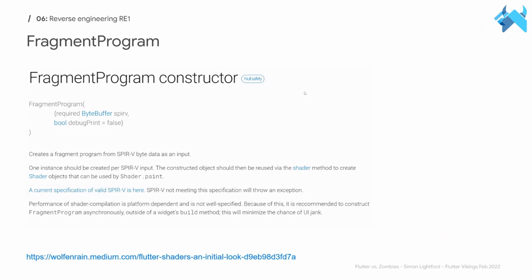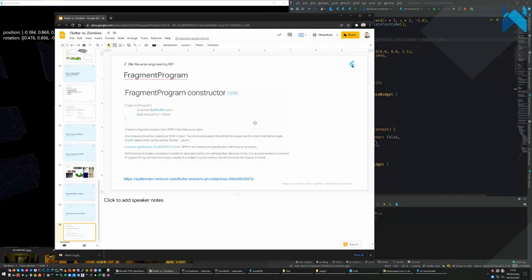Flutter now has a thing called FragmentProgram - a fragment shader - which lets you do fancy effects and will push 3D further. It's a class in Flutter you can use today with new features actively being worked on in master. One of the creators of Flame, Jochem, published an article yesterday about using these new shaders for fancy textured effects. The future of Flutter 3D is looking good.